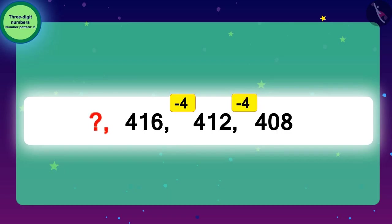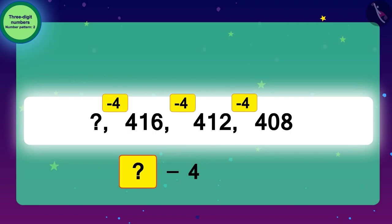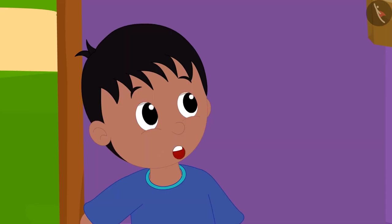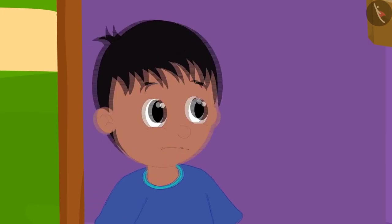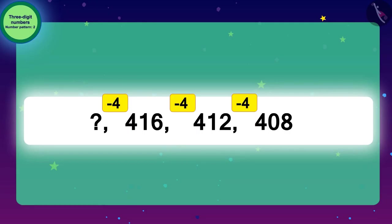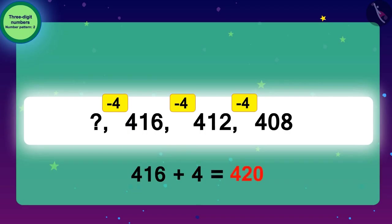Similarly, to find the next number of this number pattern, we have to subtract 4. Now, can you find the number which will result in 416 on subtracting 4 from it? It's not difficult, son. If we add 4 to 416, then we will easily find the first number of this pattern. So, the answer to our code is: add 4 to 416, that is 420.